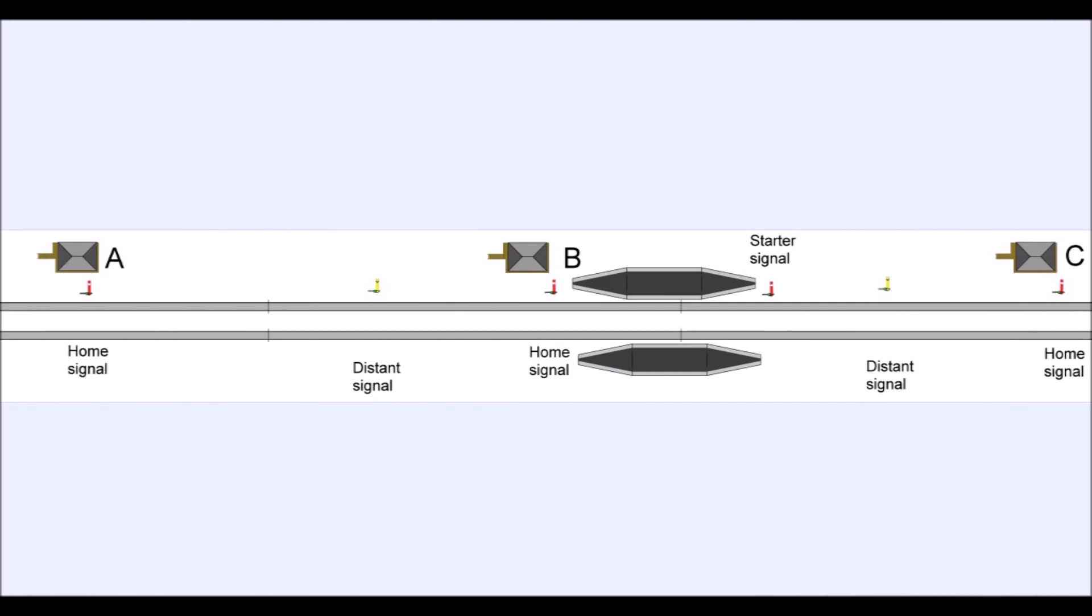Now B actually controls two bits of line. It controls the section between A and B, but it also controls what would be normally referred to as station limits, that is the tracks over which it has direct control outside its signal box. So here's a situation where we have a train coming from A, it passes B's distant signal, and then gets to B's home signal, which is the end of the block section, and now enters into B's station limits, that is, it's going to pull up at the platform and stop.